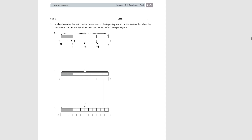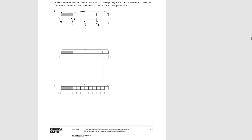Pause the video and try B the same way. We mark our zero and our one. We count and see there's a total of eight pieces, so each one is an eighth. Two pieces are shaded on the tape diagram, so that represents two-eighths on the number line.